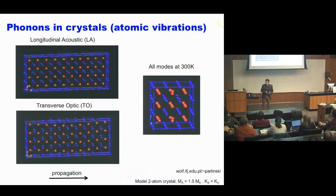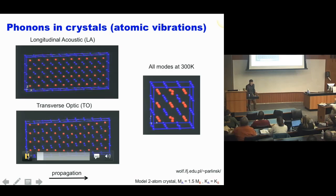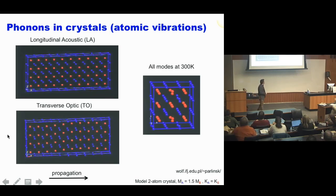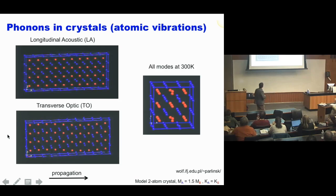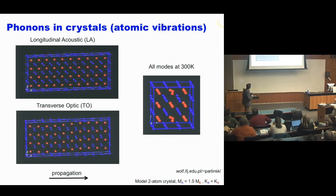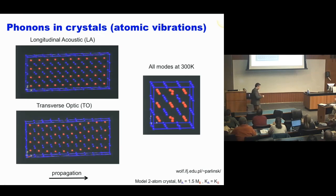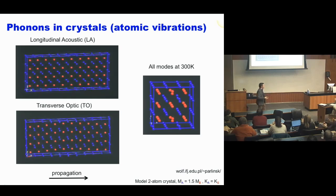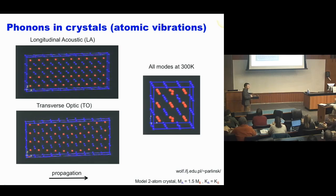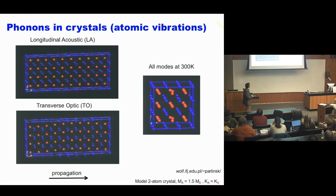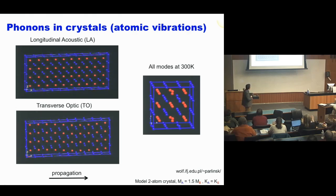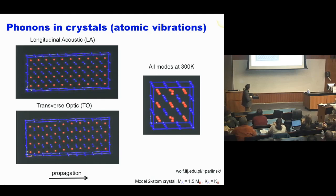I want to give you more detail about how we can describe these atomic vibrations in solids - what we call phonons. These animations show a very simplistic model of a diatomic crystal with blue and red balls. There are different types of modes this crystalline lattice can sustain - similar to structural dynamics in mechanical engineering, but now at atomic dimensions. You can have compressive sound waves propagating through the crystal, which we call longitudinal acoustic phonons - just like sound.